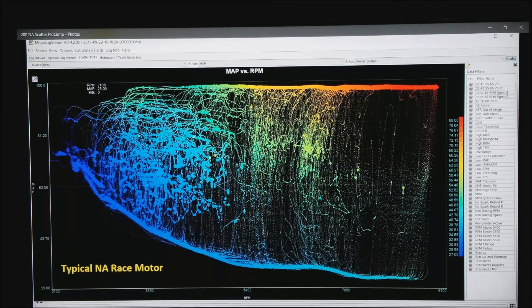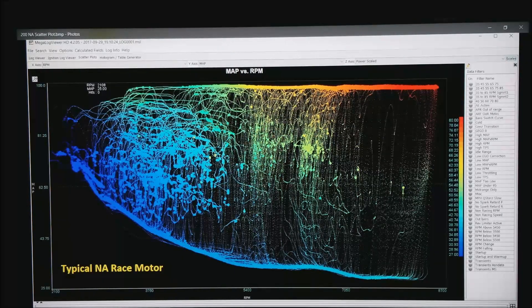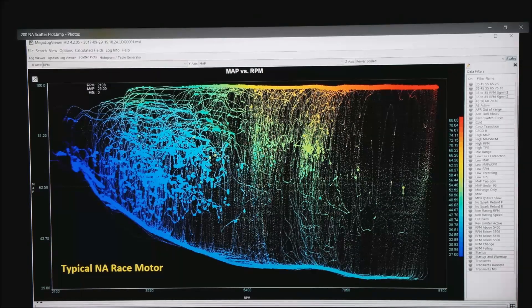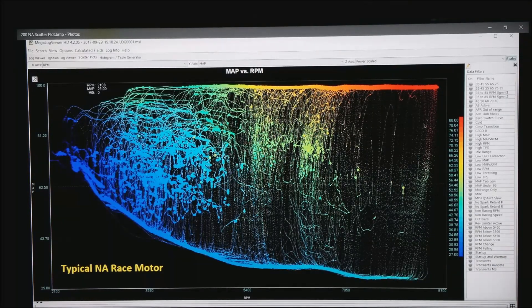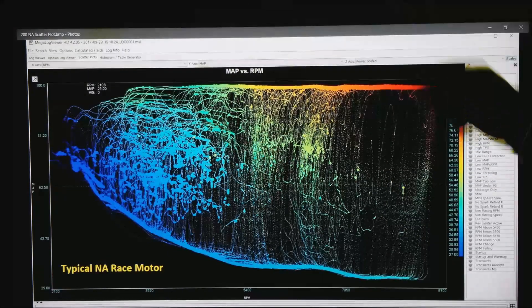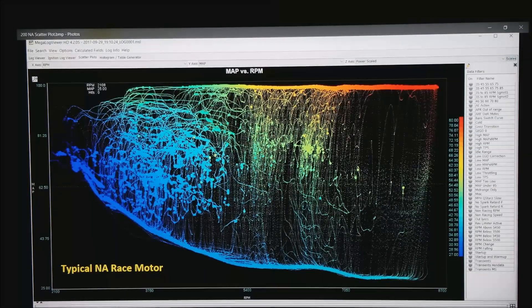The motor has a very similar footprint-like range in which you can get to. If you notice down at the bottom in this screenshot, I have RPM along the bottom, MAP, manifold absolute pressure on the vertical scale.